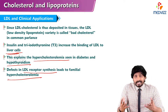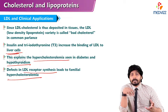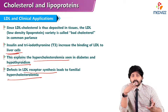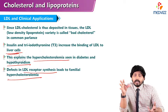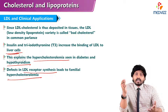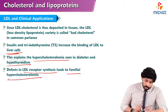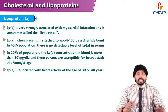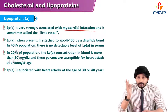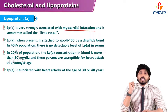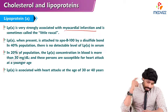Because when ApoB100 receptors and clathrin-coated receptors are not available, LDL cannot go inside, leading to high content of LDL in circulation — a condition called familial hypercholesterolemia. Lipoprotein(a) is very strongly associated with myocardial infarction and is sometimes called the 'little rascal' because it associates with LDL in causing myocardial infarction.